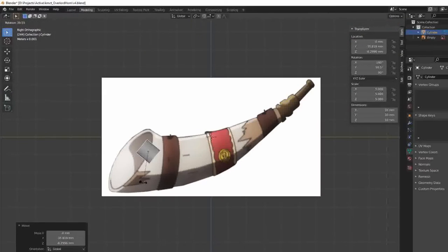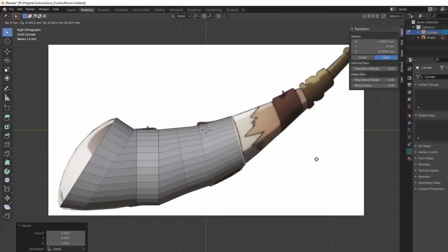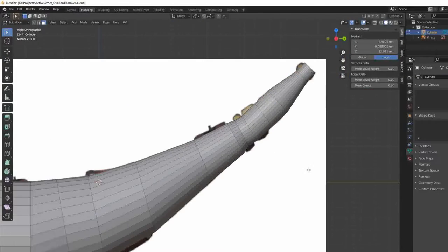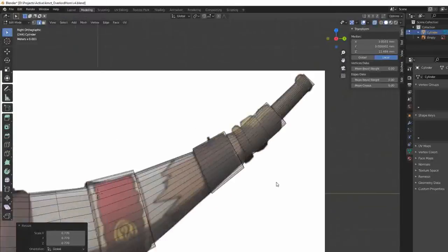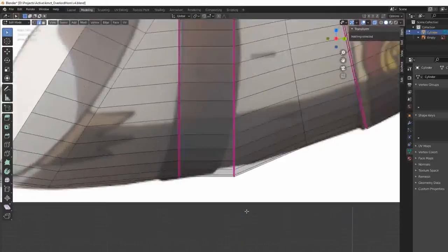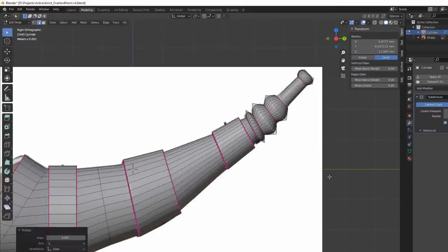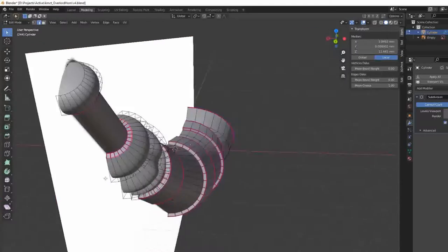My revised version only took about 40 minutes to make. This is a sped-up version of that entire modeling process. I started with a cylinder, which I moved, extruded, and scaled to match a reference image. I used a subdivision surface modifier to round everything, and then creased the edges I wanted to remain crisp.